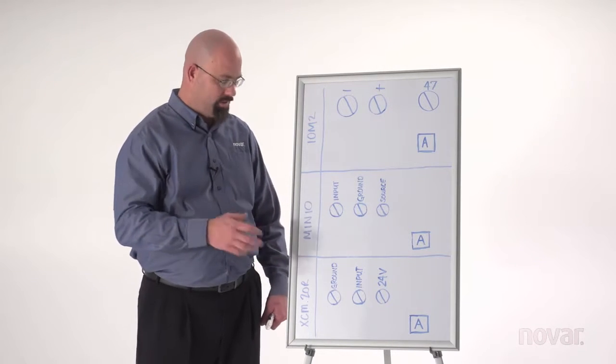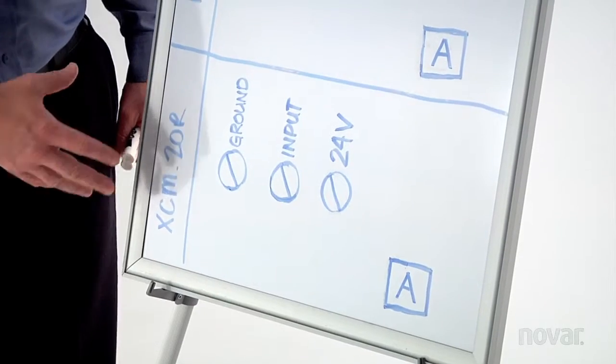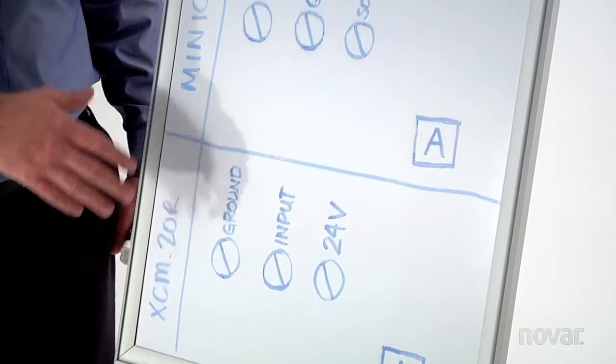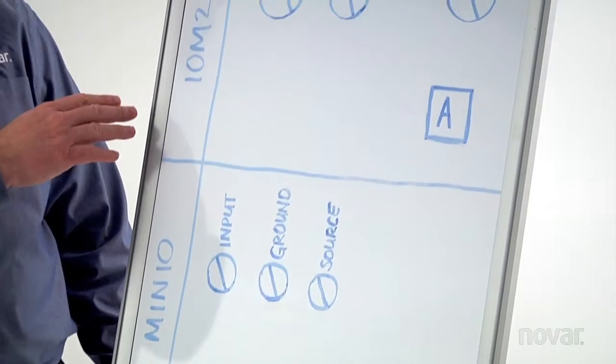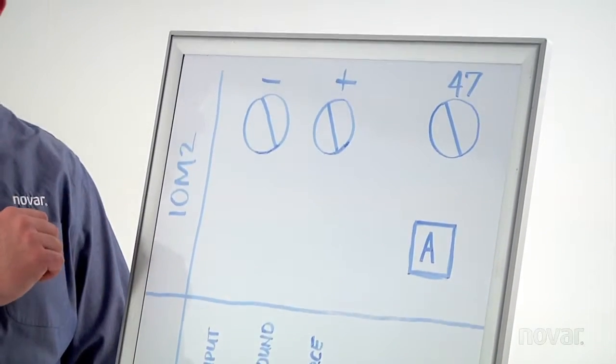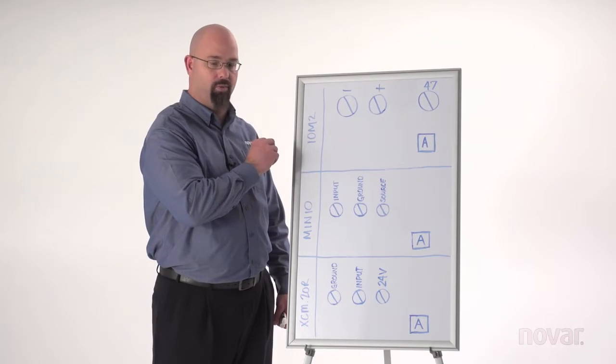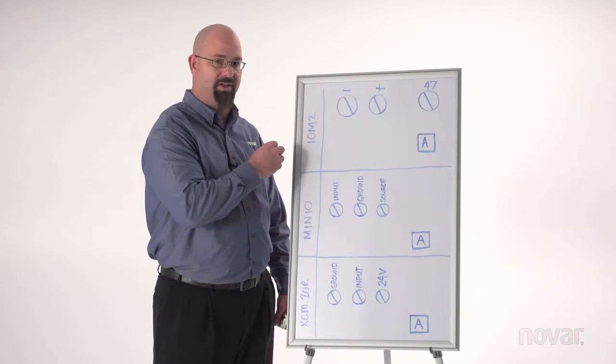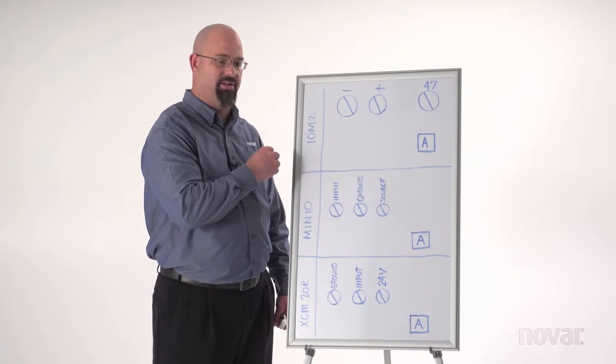The modules we're going to talk about today will be the XEM-20R, which is actually an executive controller, the MinIO, and the IOM-2. Now the IOM-2 in this reference is also the same as the original IOM, it's also the same as the SAVI, and the executive controller, also known as the EC.